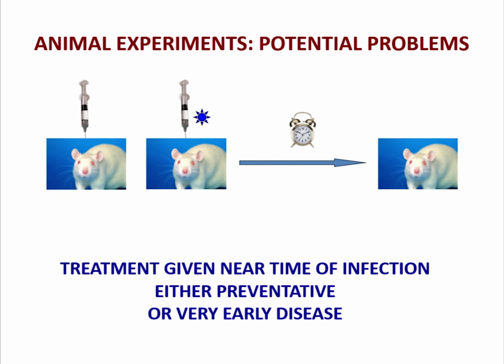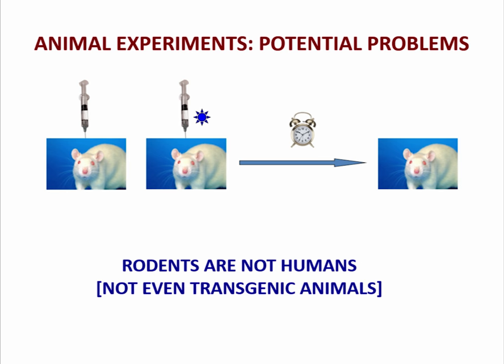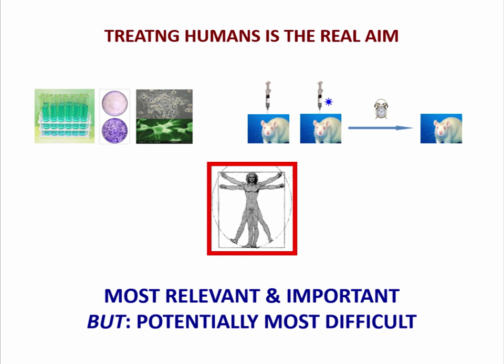Many experiments use diseases like scrapie from sheep and goats, and the question is whether results from one disease transfer to another. Most experiments are done by giving infection and treatment at the same time — looking at preventative treatments or very early disease. Does this transfer to humans who, by the time they're diagnosed, may have quite late disease? And rodents aren't humans — even transgenically manipulated mice with human genes are still not human beings.